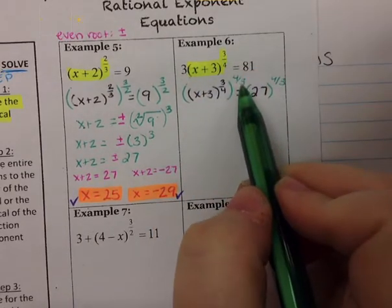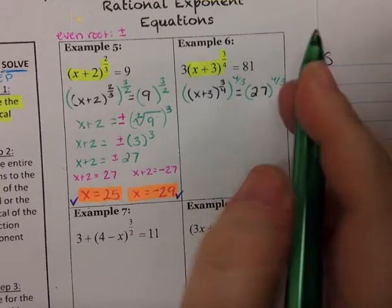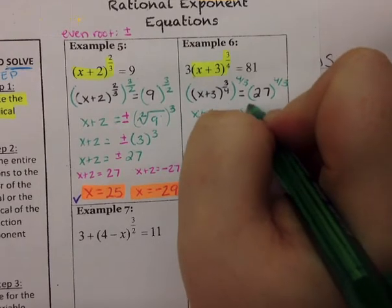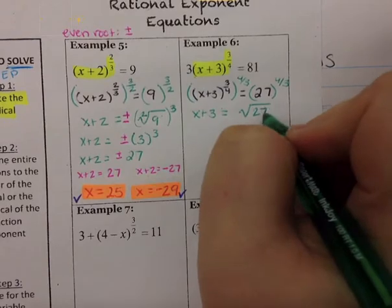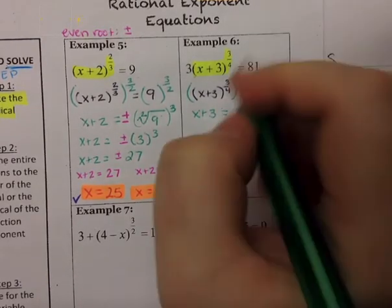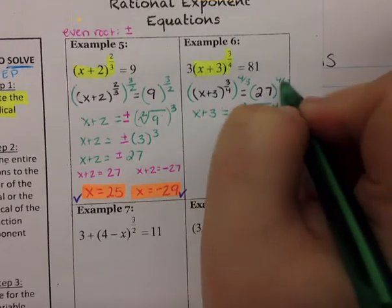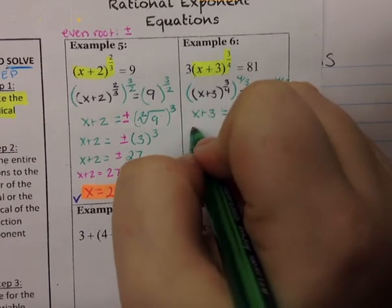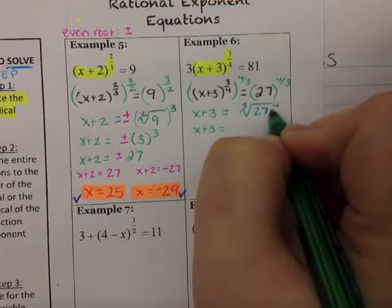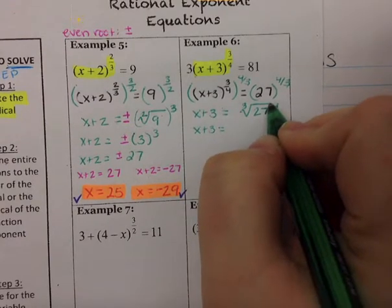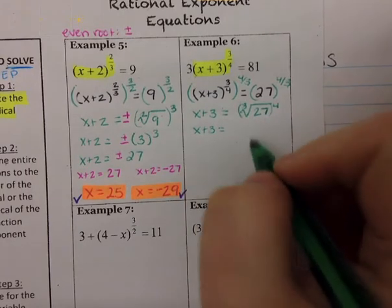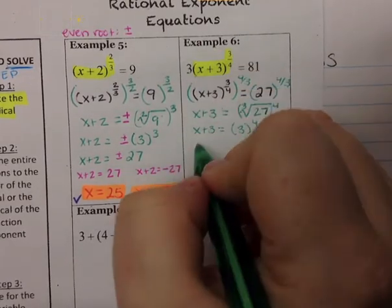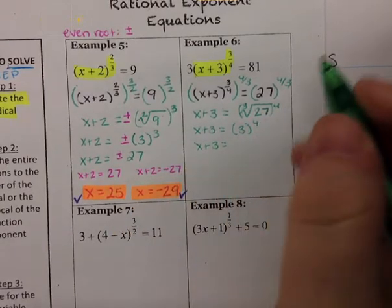So x+3 equals the cube root of 27 raised to the fourth power. I rewrite this as a radical: the radicand is 27, the index is 3, and the exponent is 4. Rather than computing 27 to the fourth power, I take the cube root of 27 first, which is 3, then raise 3 to the fourth power to get 81. So x+3 = 81.